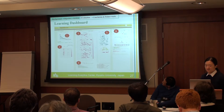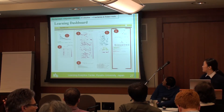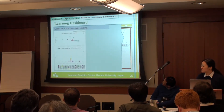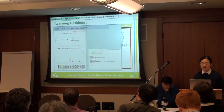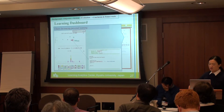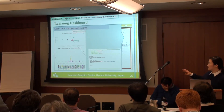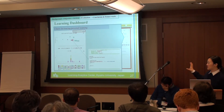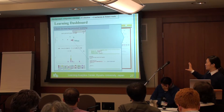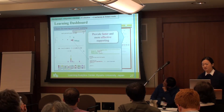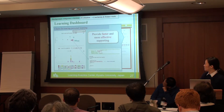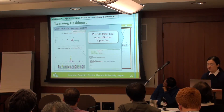When tutors find students who need help, they can use this function to trace the programming. Tutors can input a student's name and the details will appear below. Once they select a point, the programming that the student was trying to do can be found there. With this, tutors can provide faster and more effective support to students.